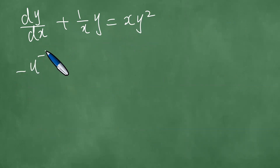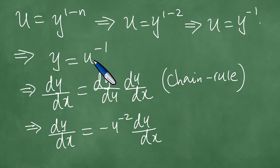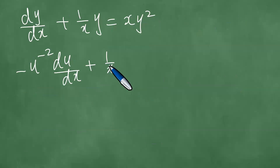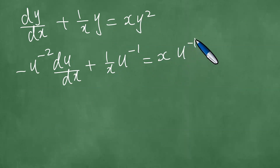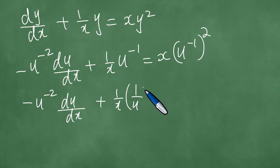We substitute: minus u to the minus 2 du/dx, plus 1 over x times u to the power minus 1, which equals x times u to the minus 1 squared, giving x times u to the minus 2. Wherever there is y, we write u to the power minus 1, so we have minus u to the minus 2 du/dx plus 1 over x times 1 over u equals x times u to the minus 2.